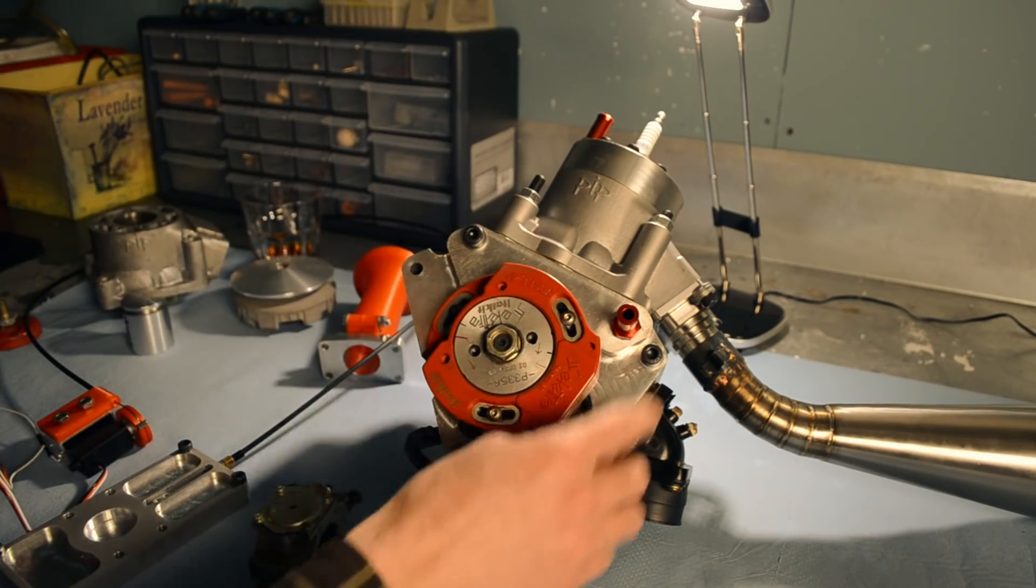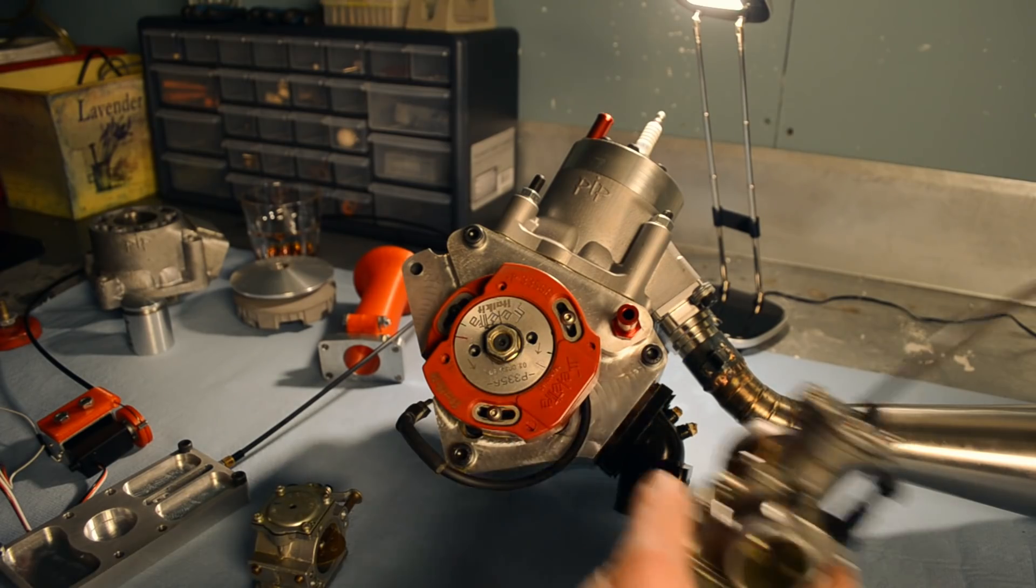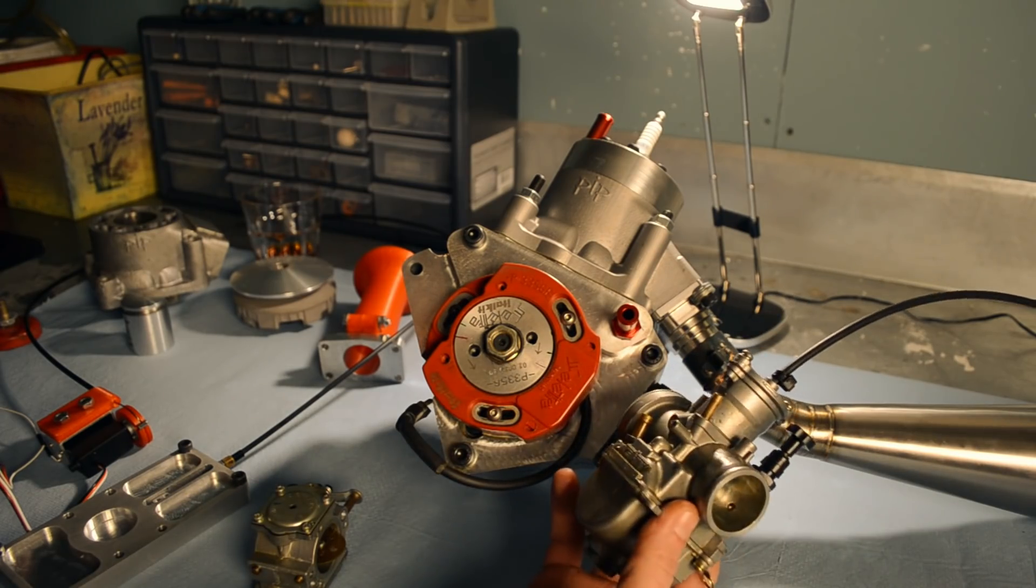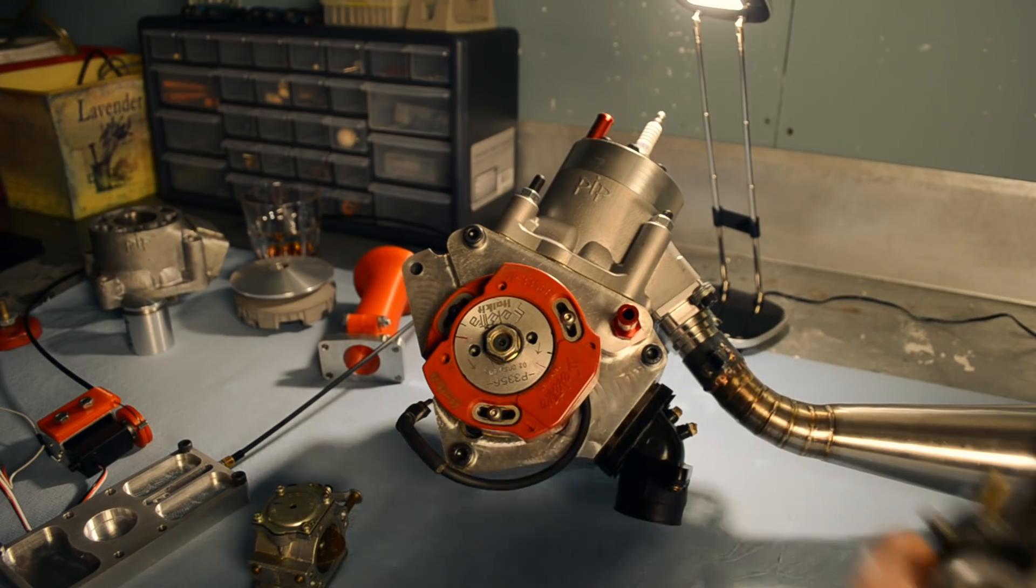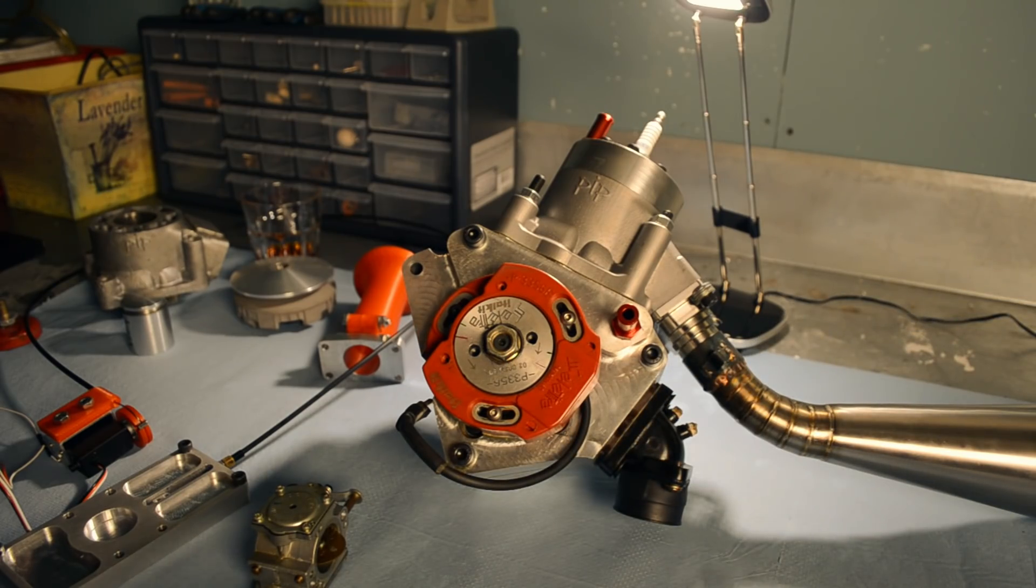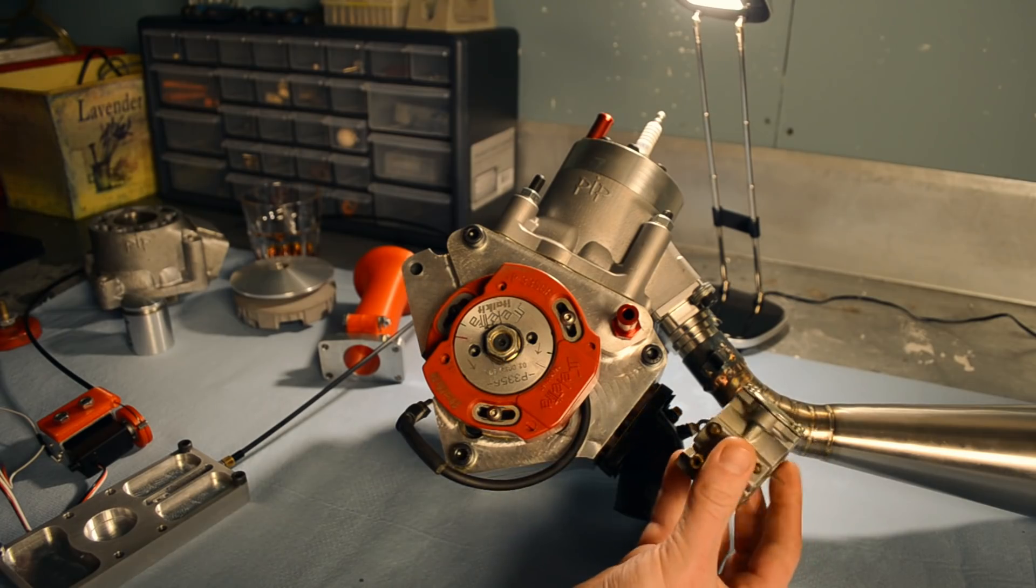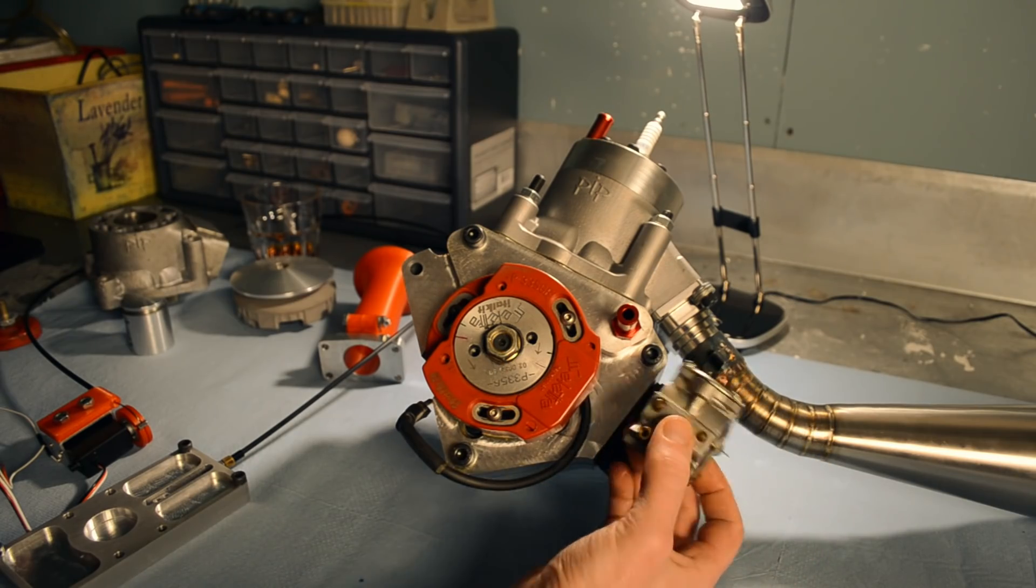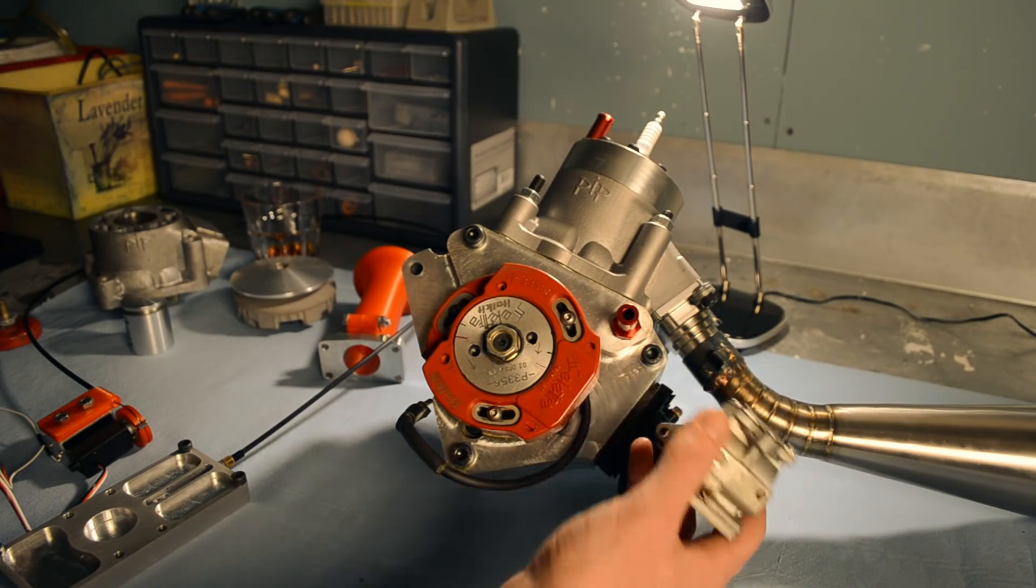Two intakes, there's a primary here. It has a manifold for this carb, a PWK 28 millimeter. But it's really going to be run with a small pumper carb like this. This is just for starting and bringing it up to RPM.